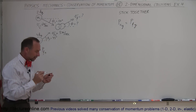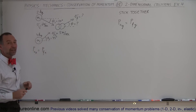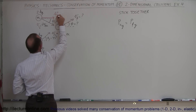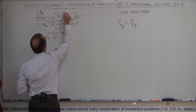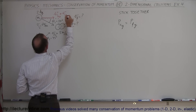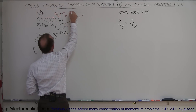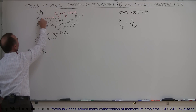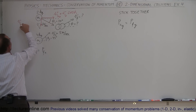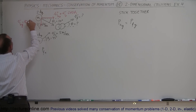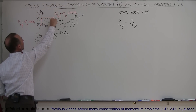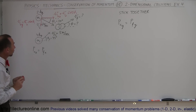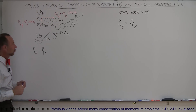Before we write the equations, we need to figure out the x and y components of each velocity. Starting with M1: v1 initial in the x direction equals v1 initial times cosine of theta1, which is 30 degrees — that's the adjacent side. The y component, v1 initial in the y direction, equals v1 initial times sine of theta1, since that's the opposite side of the triangle.